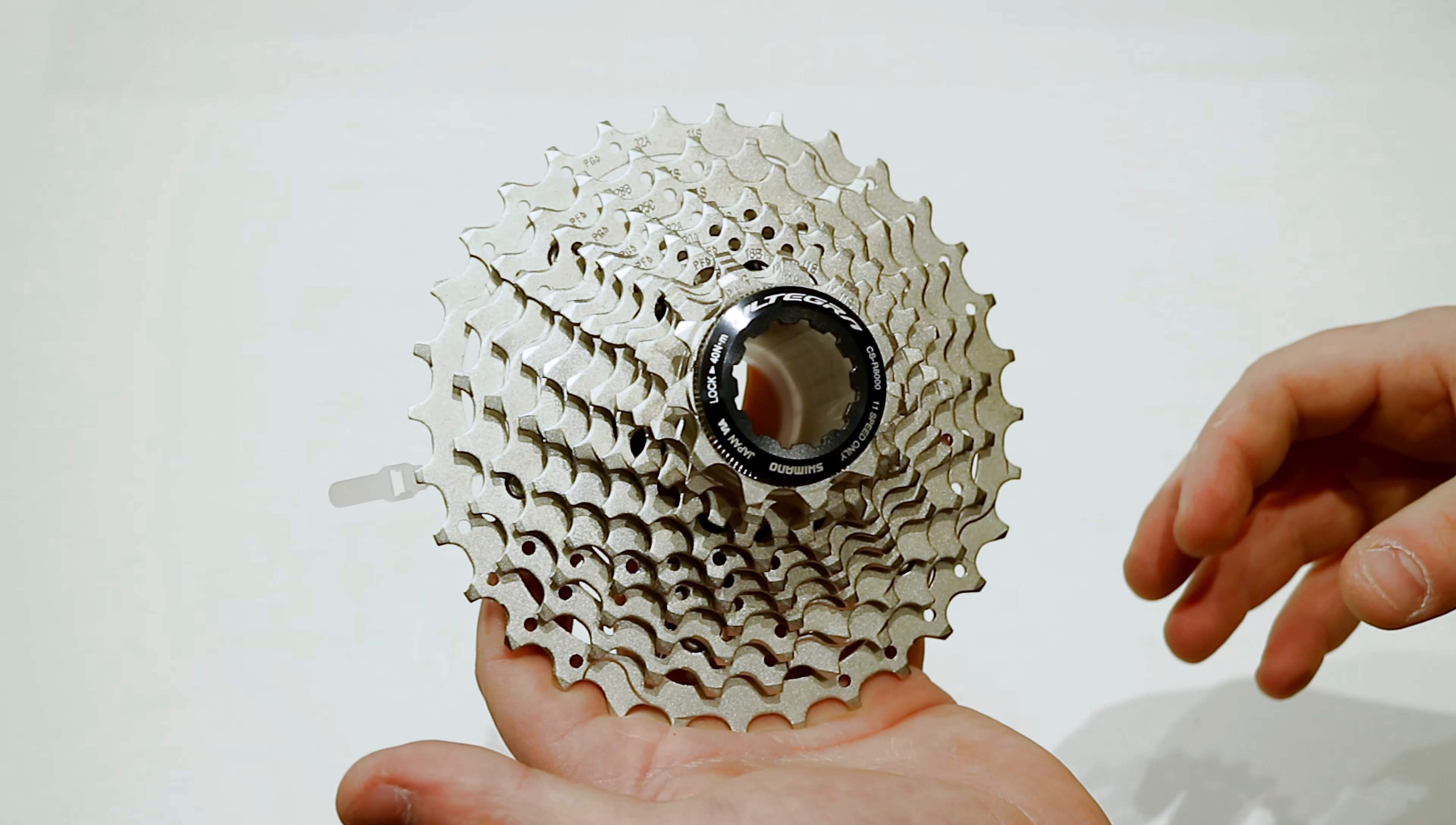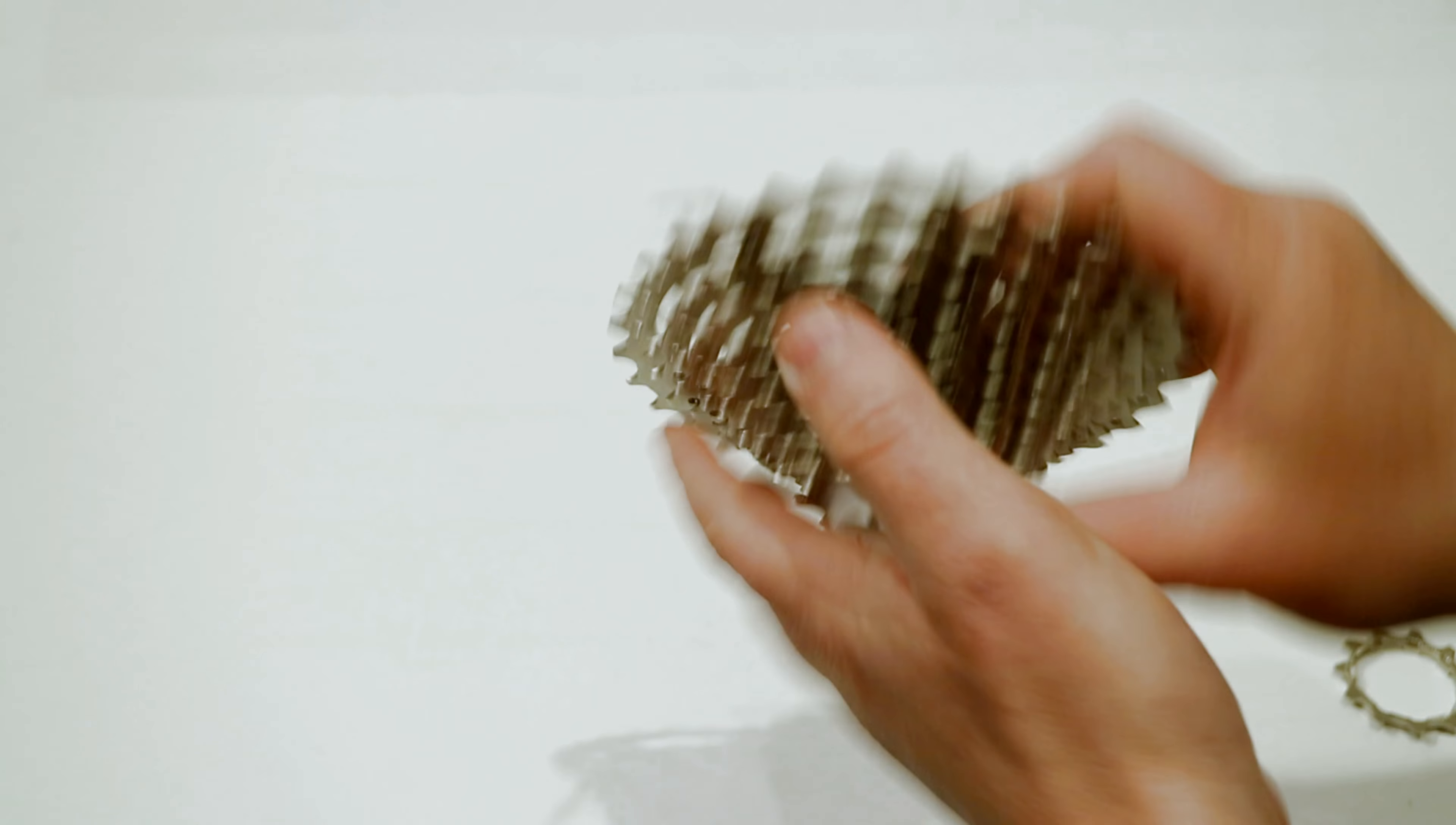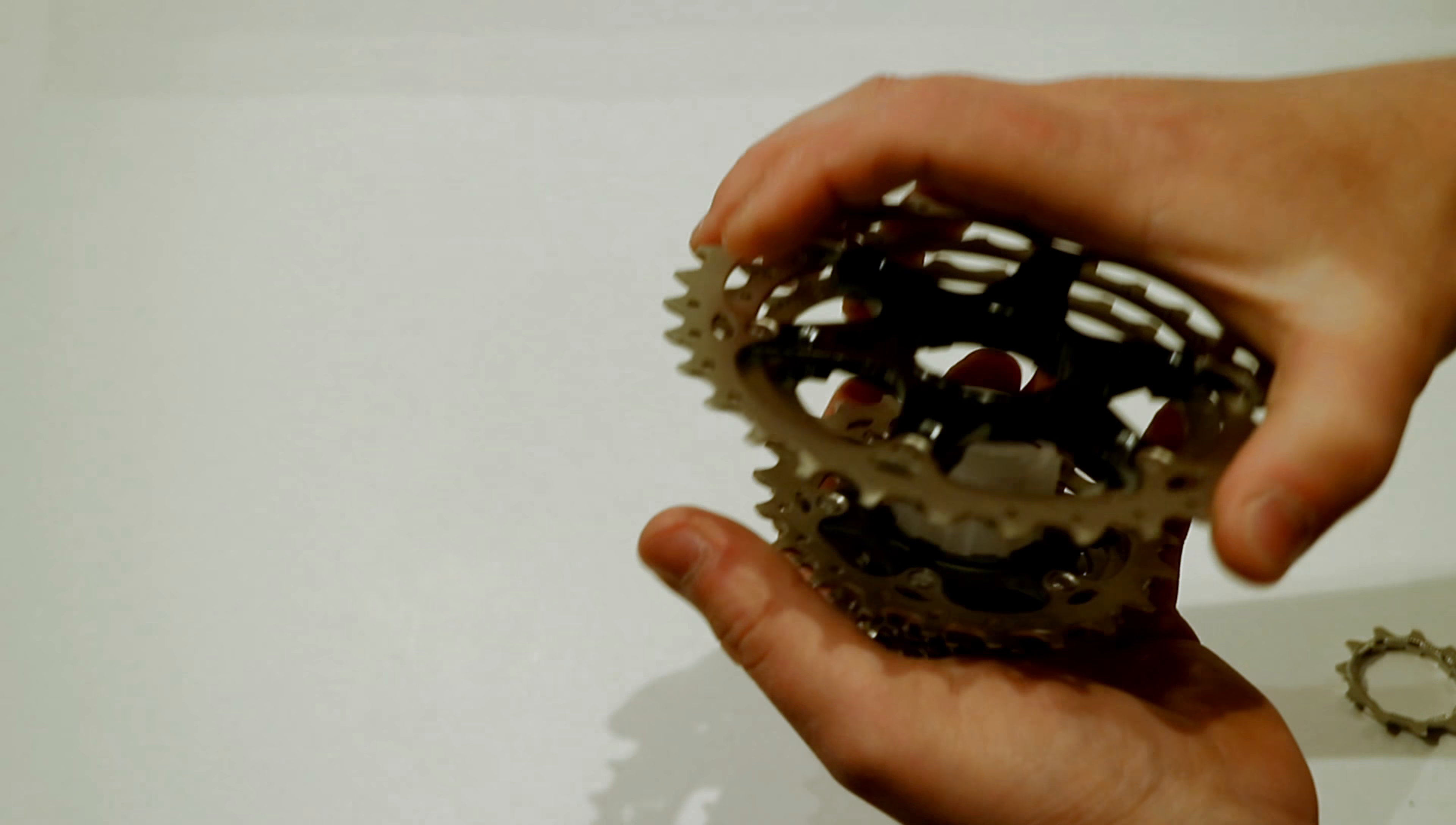But now we're seeing it on road bikes because having that extra gearing is just a nice thing. So as we take a look at it, we're going to pop this out of its packaging here, and you'll actually see the cassette is made into a few different steps.